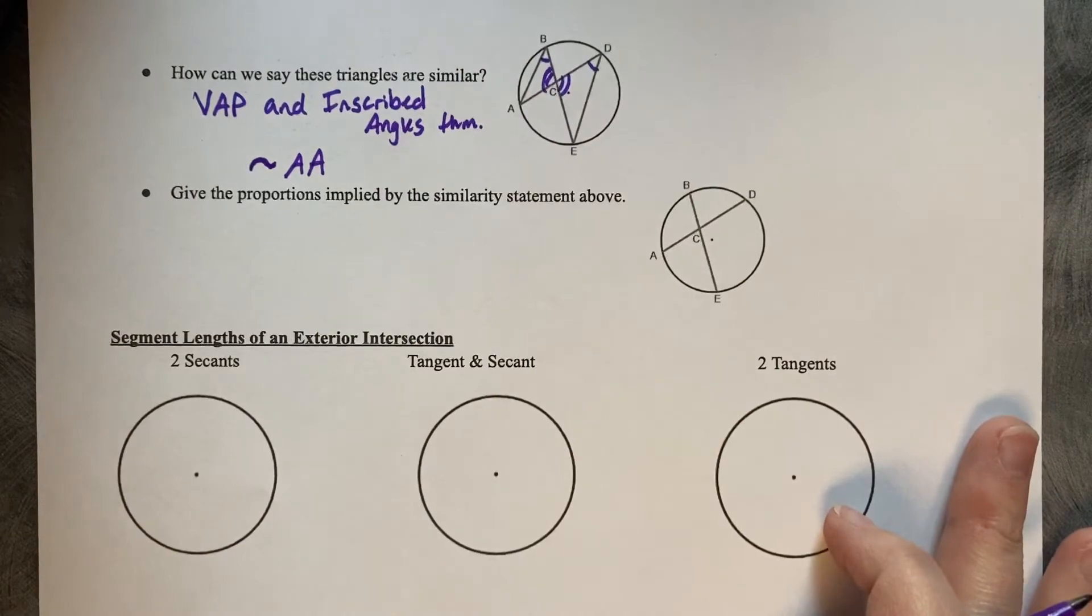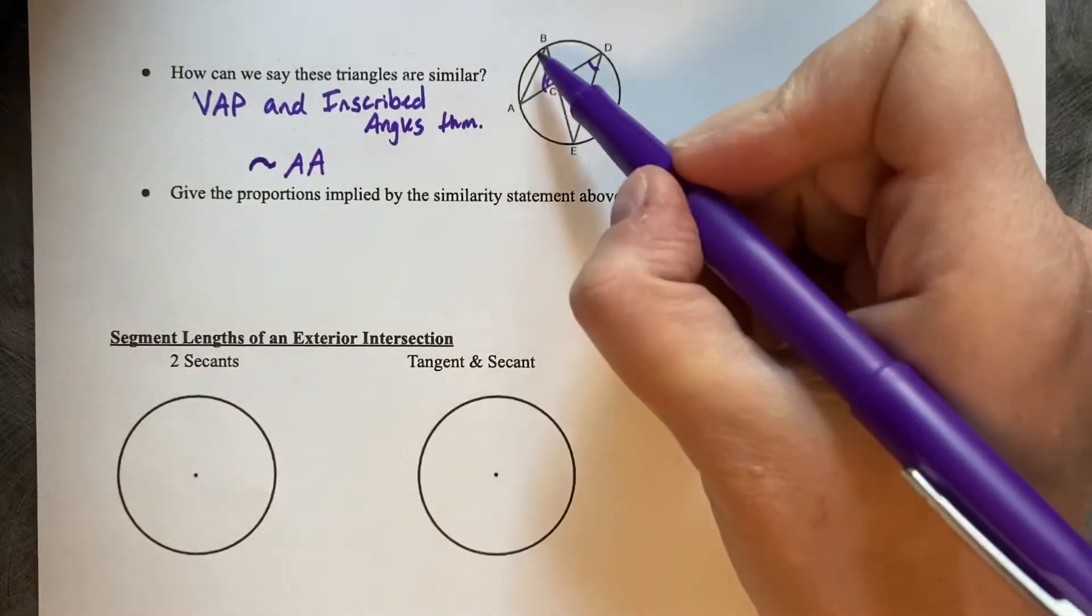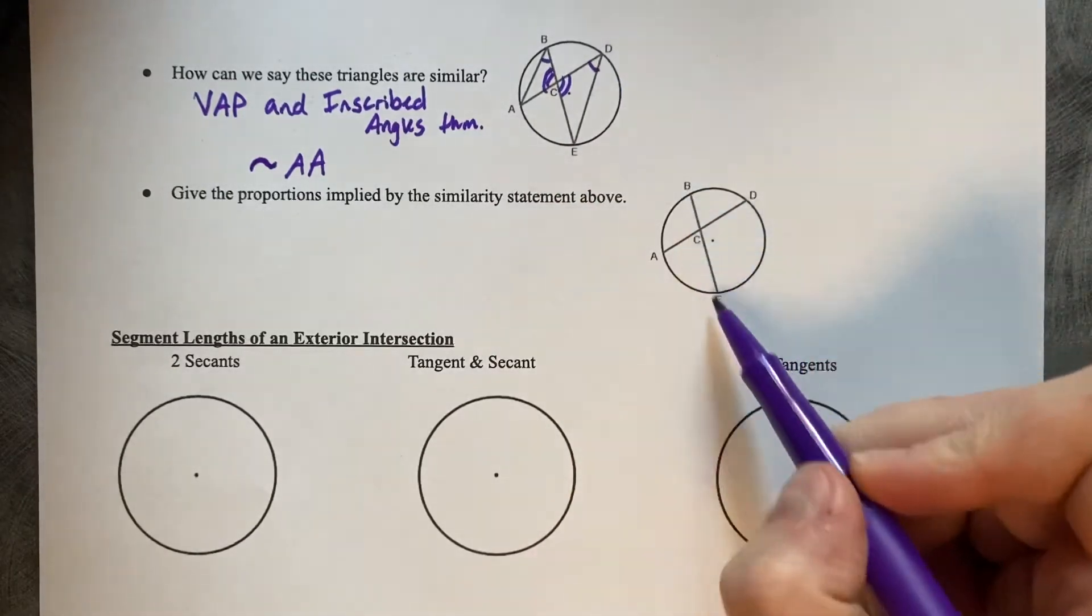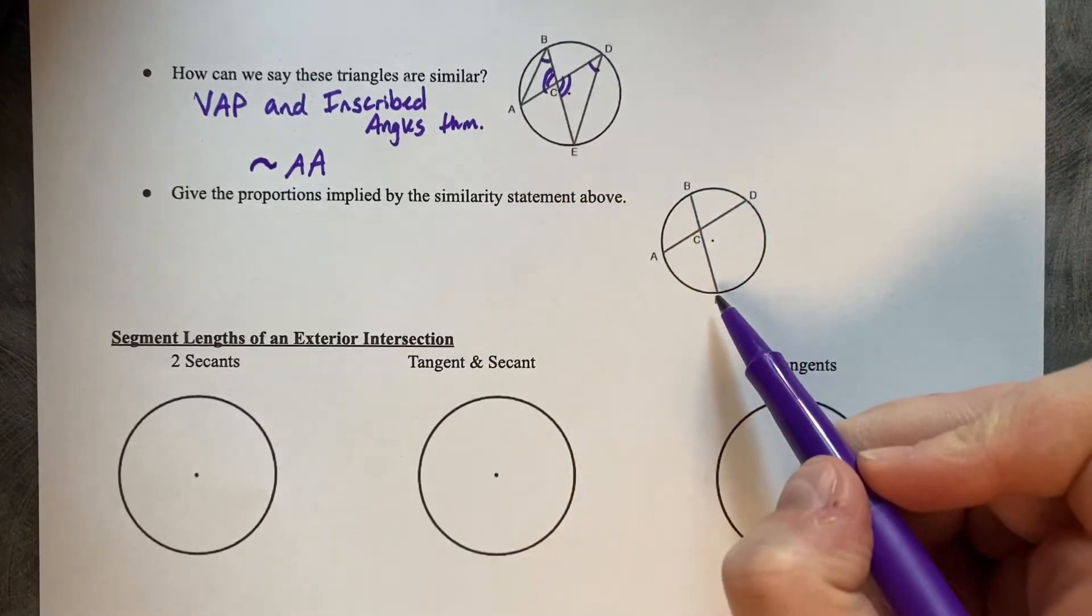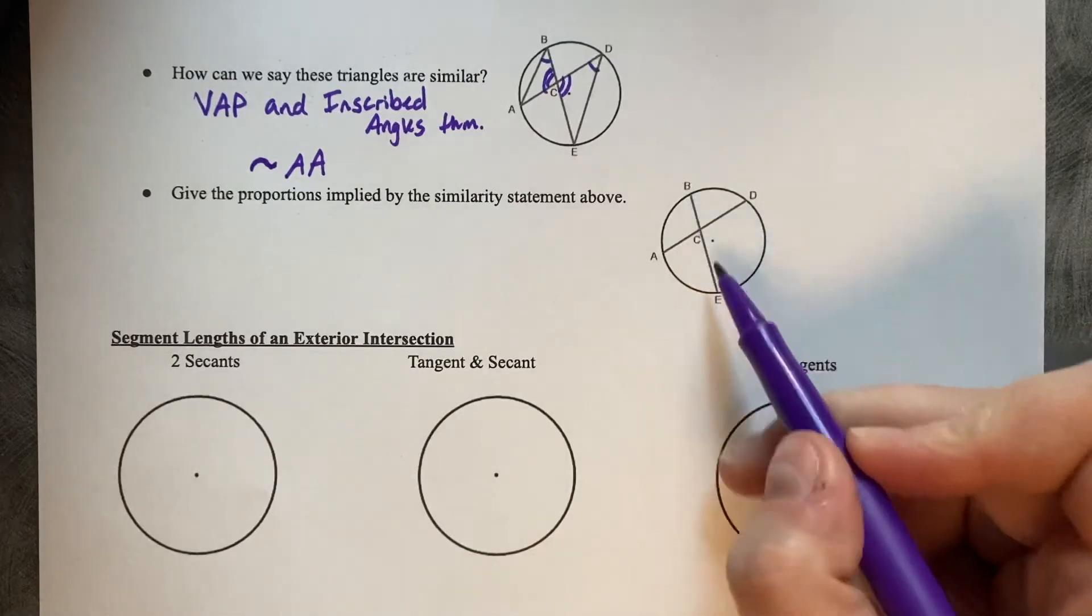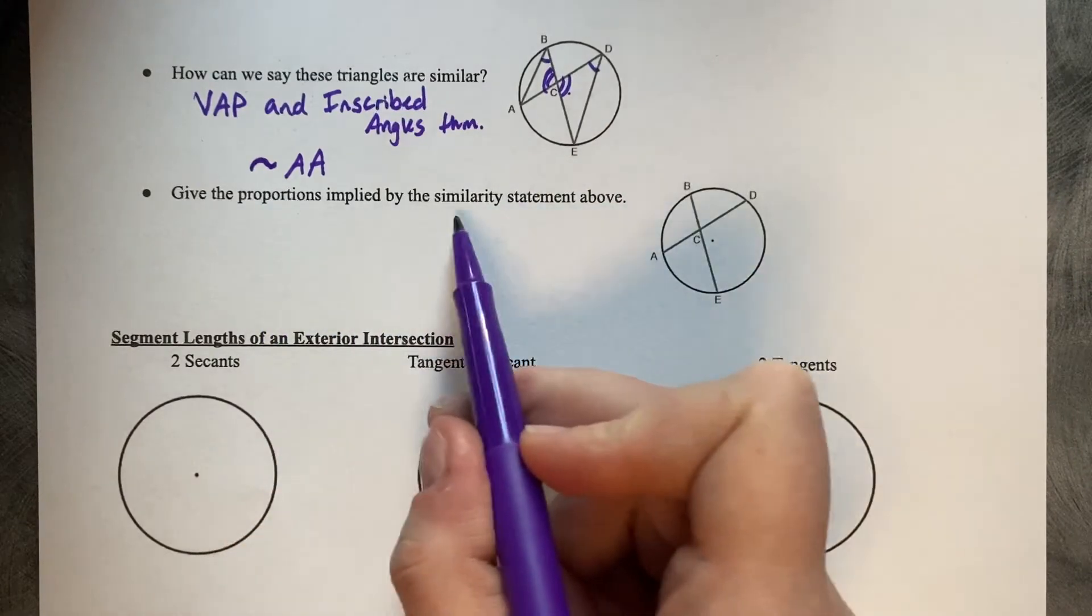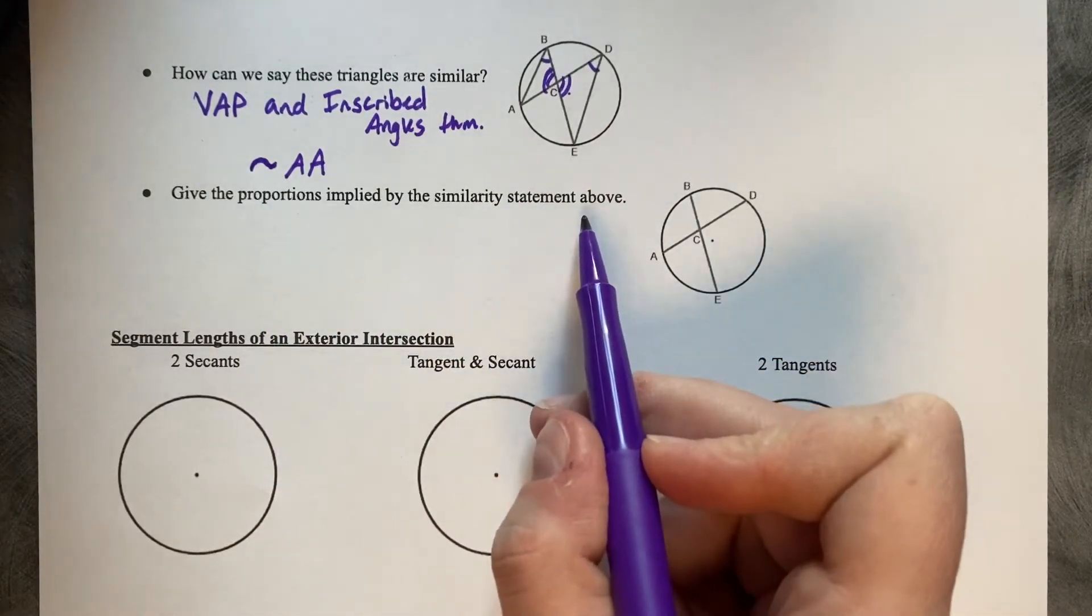So if that's the case, if those two triangles are similar, if I take away the segments BA and DE, we've got just an intersection of lines inside of a circle, which means that if those two triangles are similar, then their lengths are also similar to each other. So give the proportions implied by the similarity statement above.